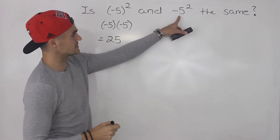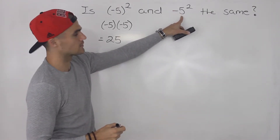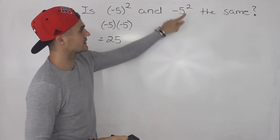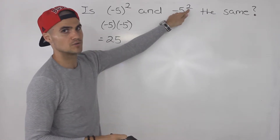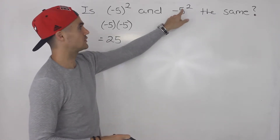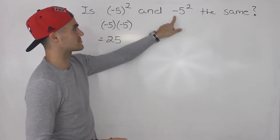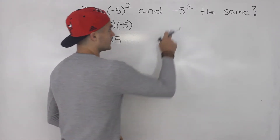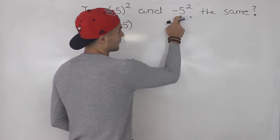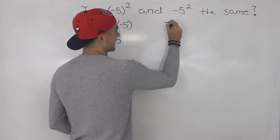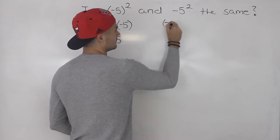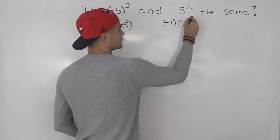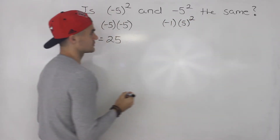Now this one — because the negative five is not in brackets, you're only taking this five to the power of two. And then you're multiplying that expression by negative one; you have to do BEDMAS. So you can rewrite this as negative one times positive five to the power of two.